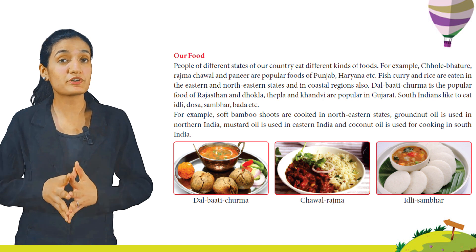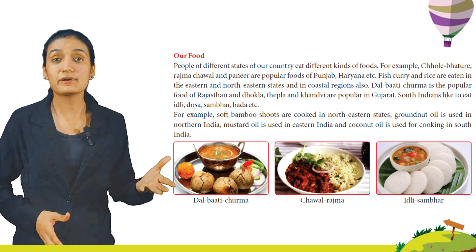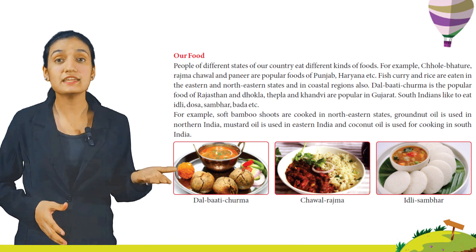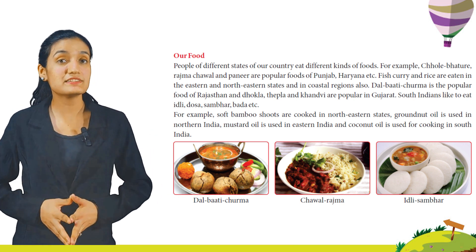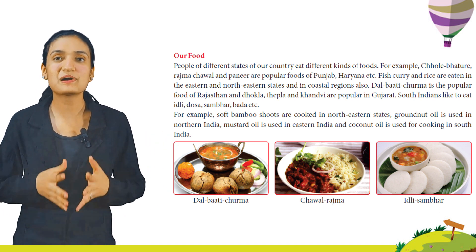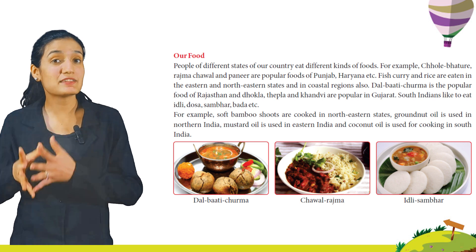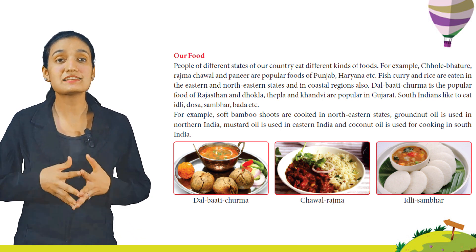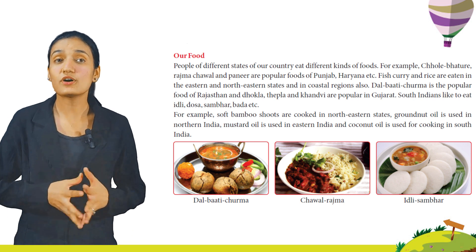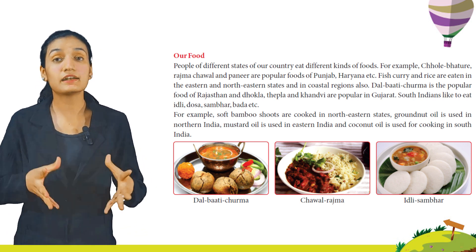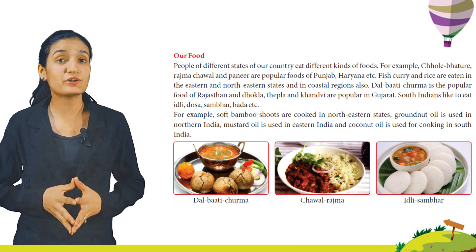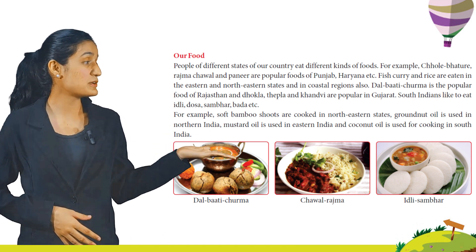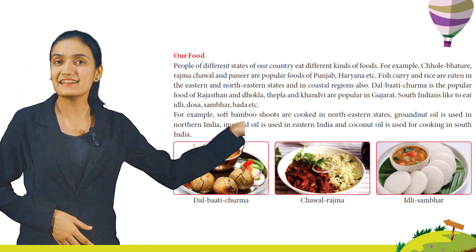Our food. People of different states eat different kinds of food. For example, Chole Bhature, Rajma Chawal, and Paneer are popular foods of Punjab and Haryana. Fish curry and rice are eaten in the eastern and northeastern states and coastal regions. Dal Baati Churma is the popular food of Rajasthan, and Dhokla, Thepla, and Khandvi are popular in Gujarat. South Indians like to eat Idli, Dosa, Sambar, and Vada. Soft bamboo shoots are cooked in northeastern states. Groundnut oil is used in northern India, mustard oil in eastern India, and coconut oil in south India for cooking.